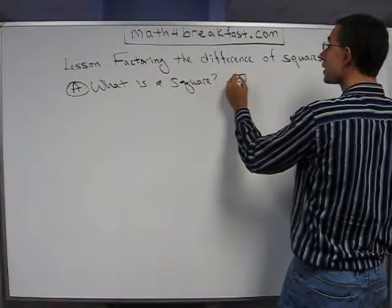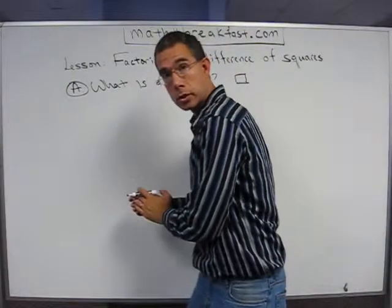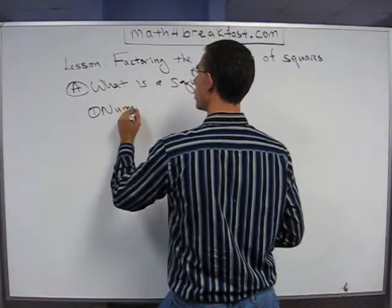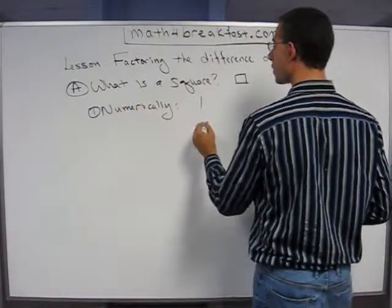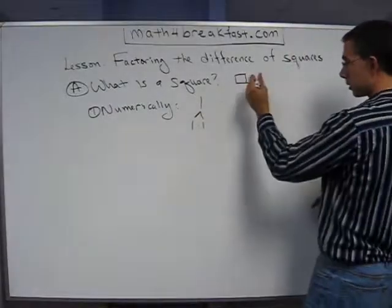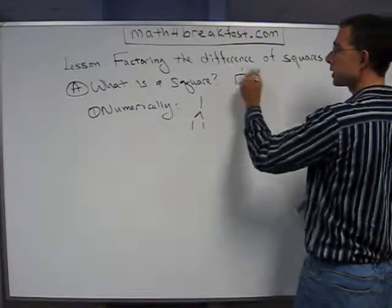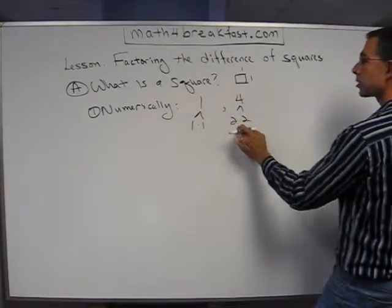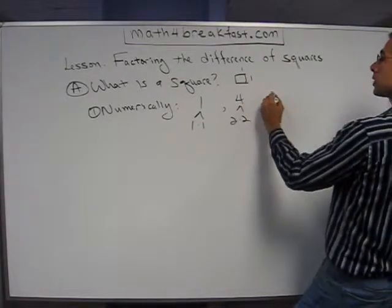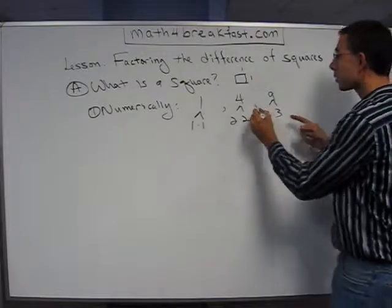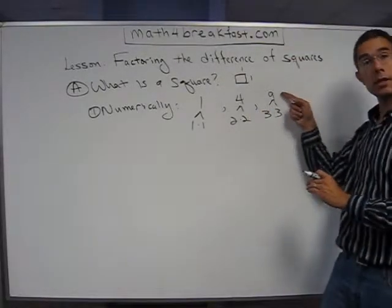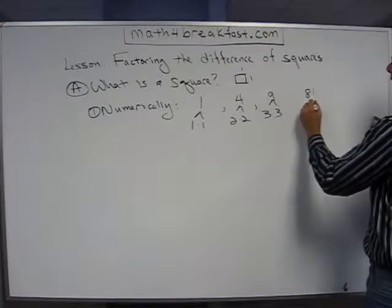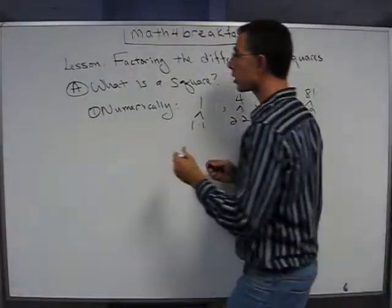If I draw an object with four equal sides, that's a square — but that's not going to help here; we're not drawing pictures today. Numerically, a square is something like one, because one is the same as one times one. Four is a square because it's two times two. Nine would be another square, because three times three gives me nine — a number times itself. If something times itself can get you a number, then that number is a square. The one, four, nine, 81 — because that's nine times nine — those are the numerical squares.